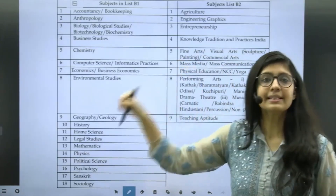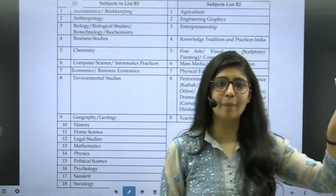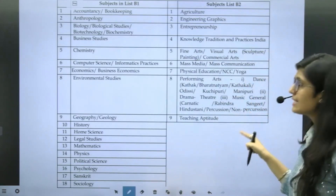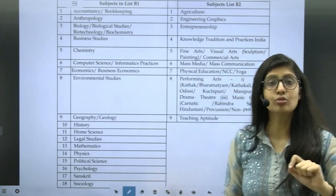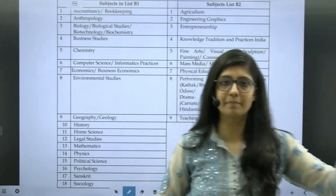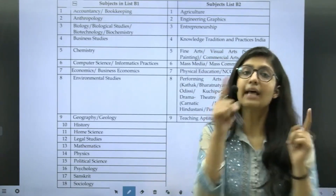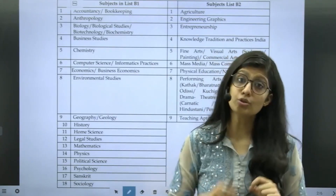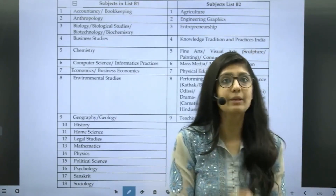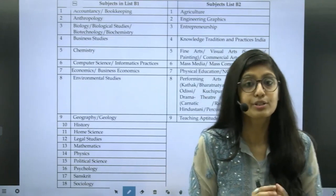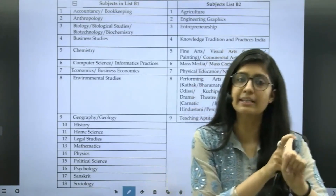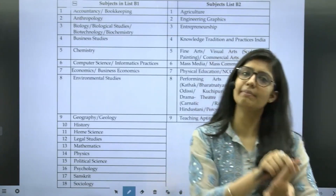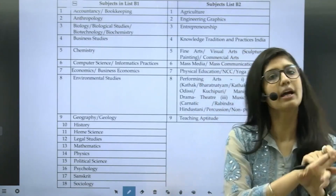Moving on to LISTE B — LISTE B is basically divided into two parts: B1 and B2. What they are saying is that you need to choose any one subject from B1, that is for sure. The other subject you can choose from LISTE B2, or you can choose both subjects from B1 itself. So one has to be compulsorily from B1; the other can be either from B2, or both can be from B1 — they are okay with it.